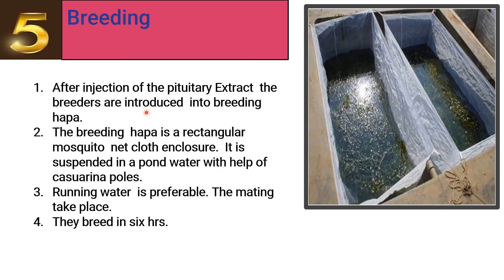Fifth, breeding: after injecting the pituitary extract, the fishes are allowed to breed. The breeding enclosure is called a hapaa. The hapaa is a rectangular mosquito-net cloth enclosure suspended in pond water with the help of bamboo cones or bamboo sticks. Running water is preferable because mating should occur naturally. The fish wait in the hapaa for about six hours.